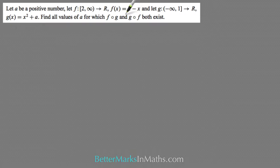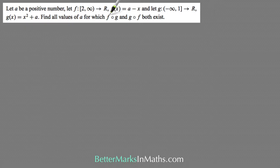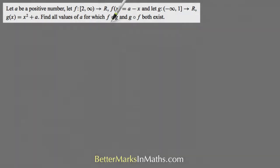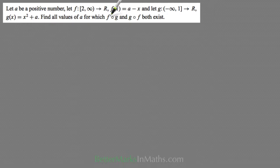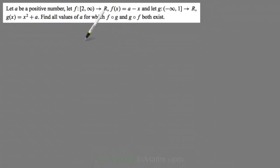For a composite function to work, the range of the inner function must be contained in the domain of the outer function. So for fog, the range of g must be contained in the domain of f. For gof, the range of f must be contained in the domain of g. You need to figure out the range of g, check what value of a makes that range contained in the domain of f, and do similarly for gof. Then find the intersection of those values.